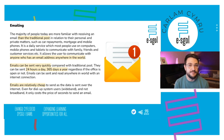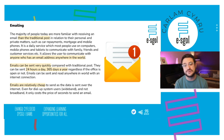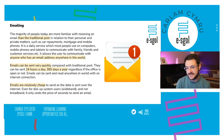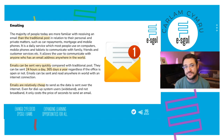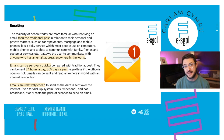That's obviously a major advantage because the traditional post takes at least a day if using first class, or longer with second class. Also, emails can be sent 24 hours a day, 365 days a year, whereas you don't get post on a Sunday. And be careful — don't say that emails are free to send. They are extremely cheap, very very cheap to send.